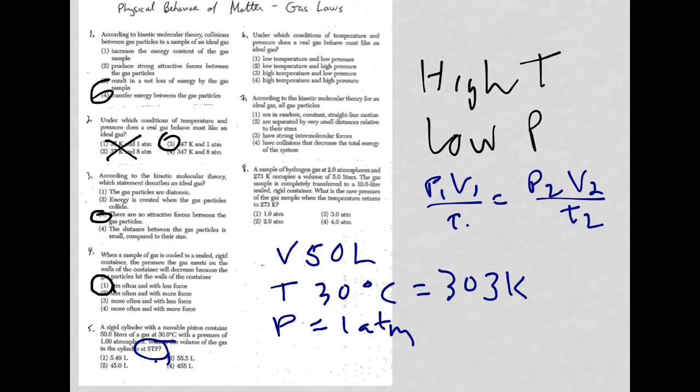My initial pressure is 1 atm. My initial volume, 50 liters. My initial temperature, I just erased it, was 303 Kelvin. On the other side, again, 1 atm. So I really could cancel those, V2. And my new temperature is standard temperature, 273 Kelvin. So I have to solve for V2.